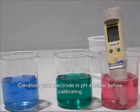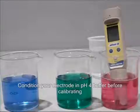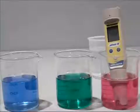Before you begin, condition your pH tester electrode by immersing it in electrode storage solution, pH 4 buffer, or tap water for at least 30 minutes before use. Do not use deionized water.